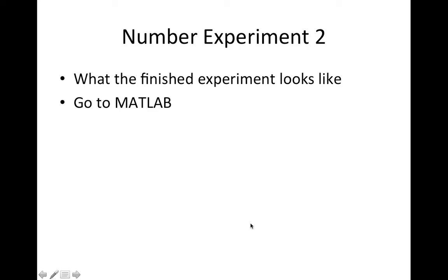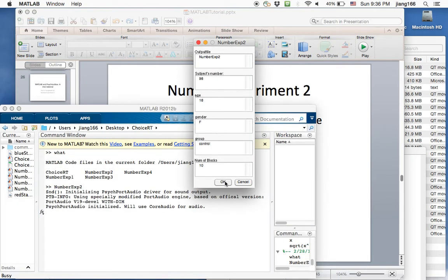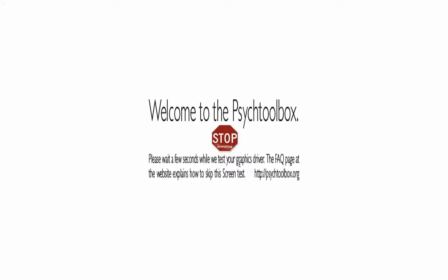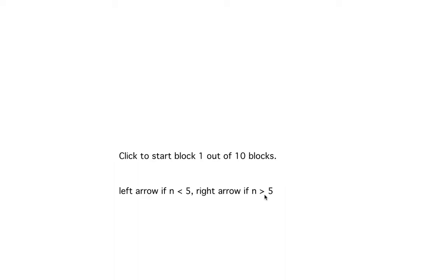I want to show you what the finished experiment looks like, so let's go to MATLAB. You'll remember that this experiment is just going to be like the first one. So we're going to ask participants to evaluate whether the number of dots is greater or less than 5. We're going to start with the first block.